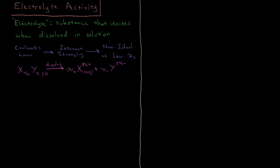When these dissolve into ions, you get ν+ moles of cation X with a positive charge whose magnitude is some integer times ν−, and ν− moles of anion Y with a negative charge whose magnitude is that same constant times ν+. This constant Z accounts for cases where you have dications, adding a factor of two beyond just the stoichiometric coefficients. The key point is we have ν+ moles of cation and ν− moles of anion.